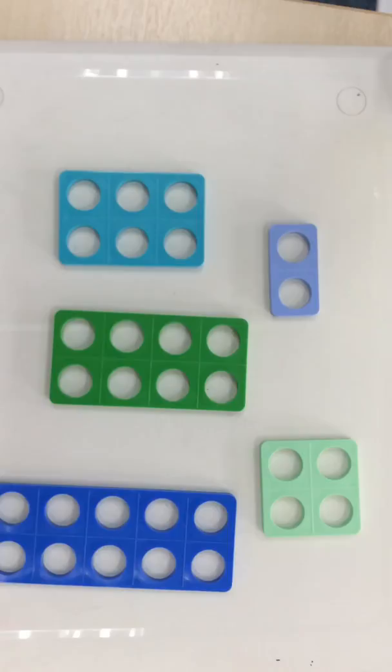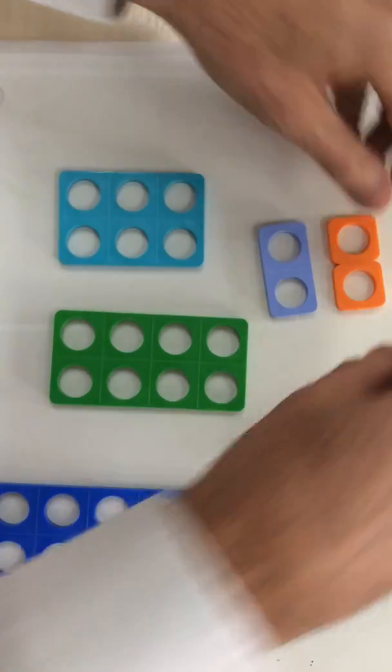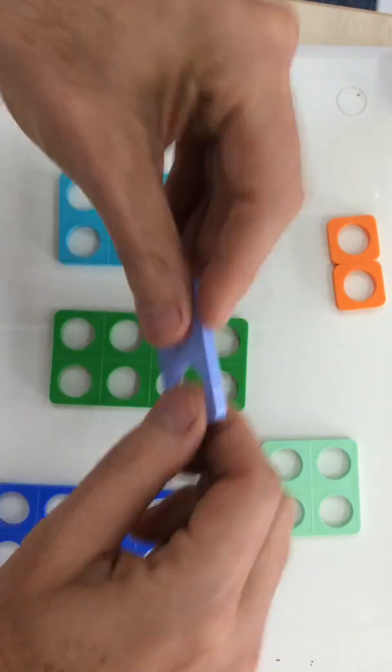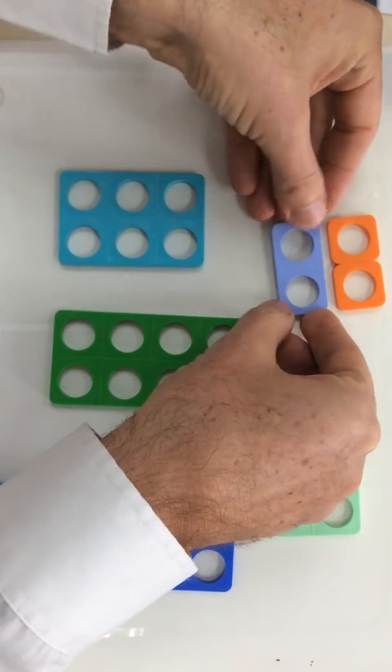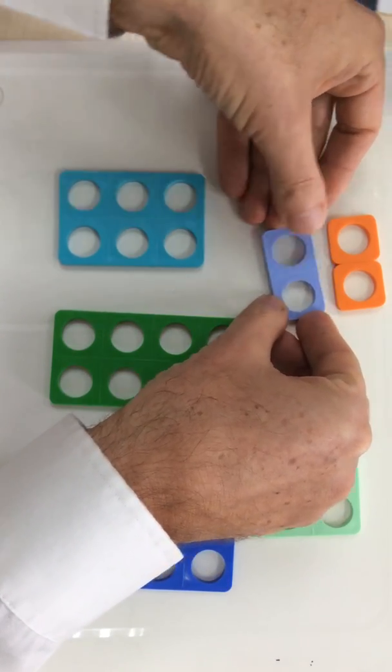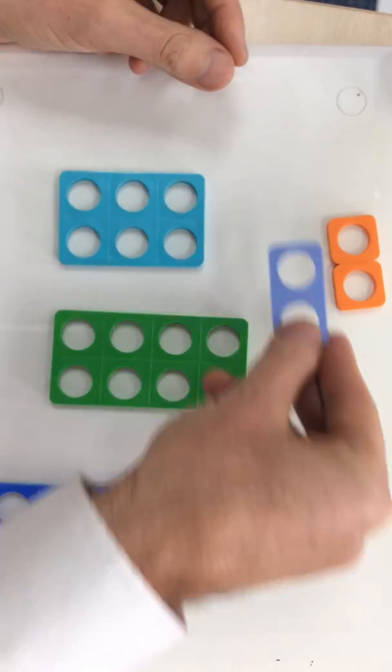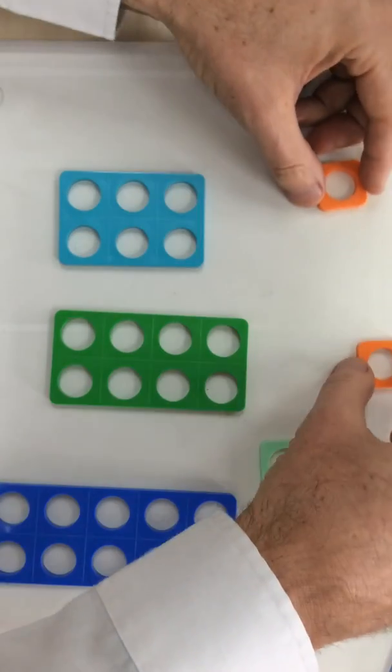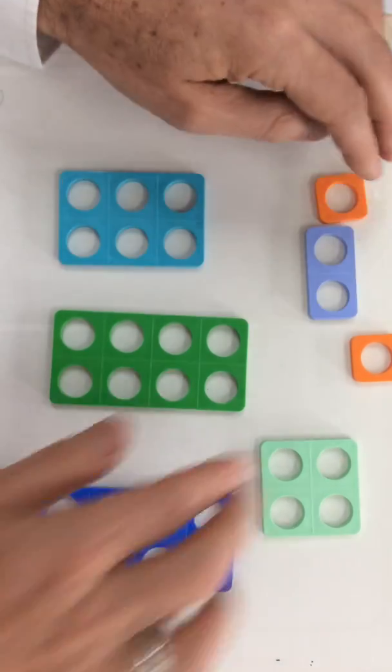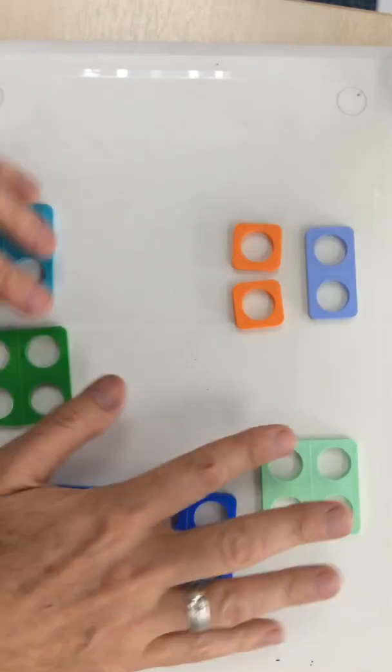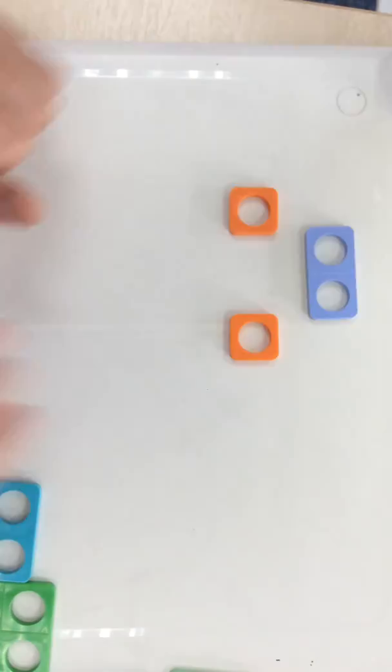So halving means splitting into two identical pieces. Splitting a number into two identical pieces. And because I can't actually break this apart, I'm going to swap it because it's the same amount as these two 1s. So I'm swapping the 2 for 2 1s, which I can split. So, half of 2 is 1.